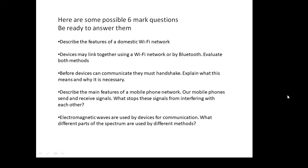'Describe the main features of a mobile phone network.' 'Our mobile phones send and receive signals — what stops these signals from interfering with each other?' 'Electromagnetic waves are used by devices for communication — what different parts of the spectrum are used by different methods?' To do well on these questions, you need to have learned some stuff, so get reading your book, have a good look at this video, and get some stuff learned.